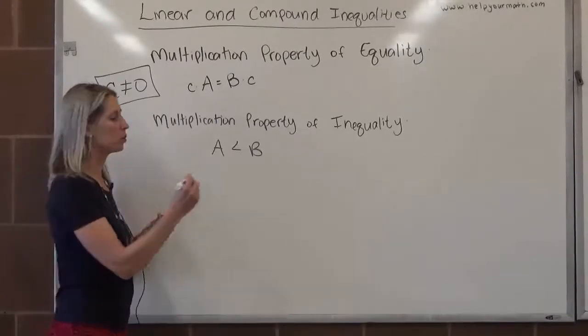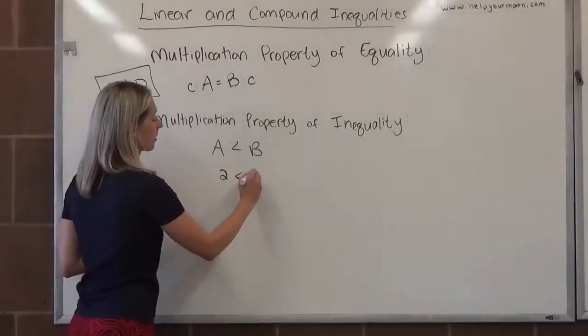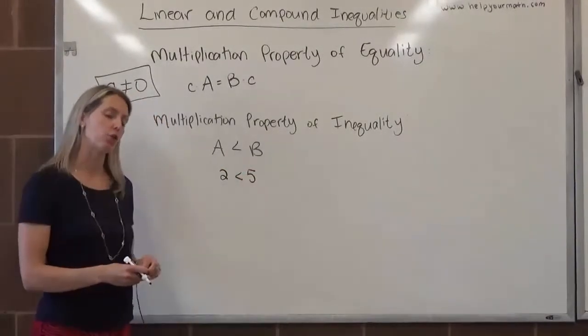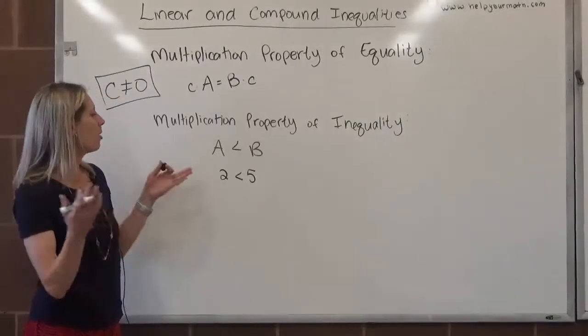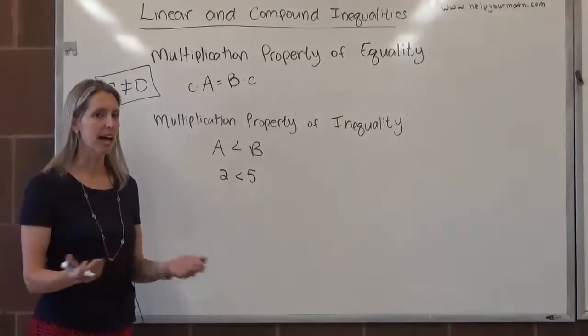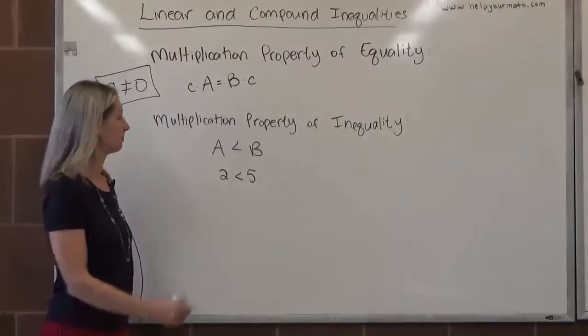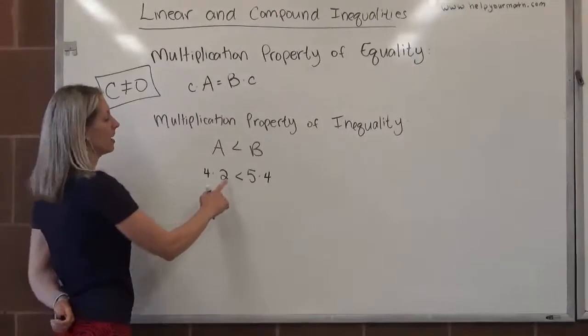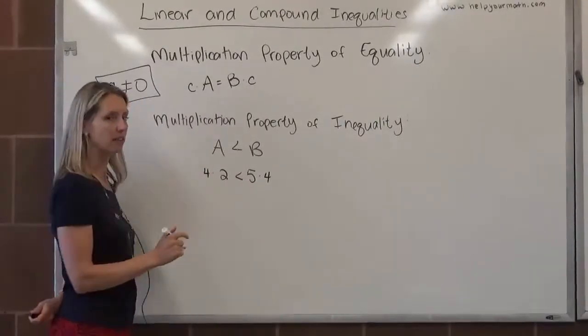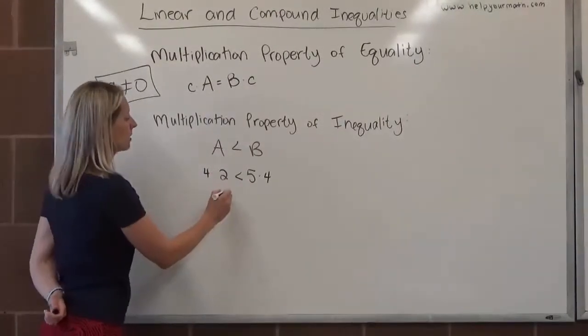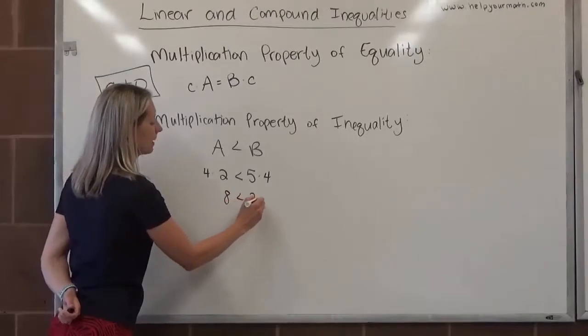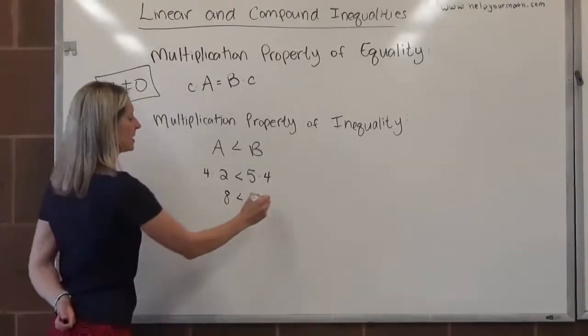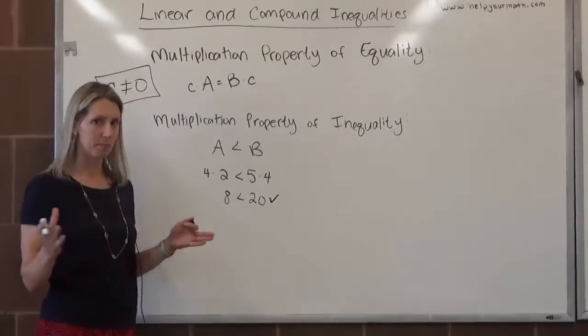So let's go with two is less than five. Hopefully we all agree that that's true because it is. And now let's multiply the same thing to both sides. Let's multiply both sides by four. I'm just choosing four at random just to see if it maintains that this side is less than this side, that the left is less than the right. Well, this would give us eight is less than 20. That works. Great. So it held up there.